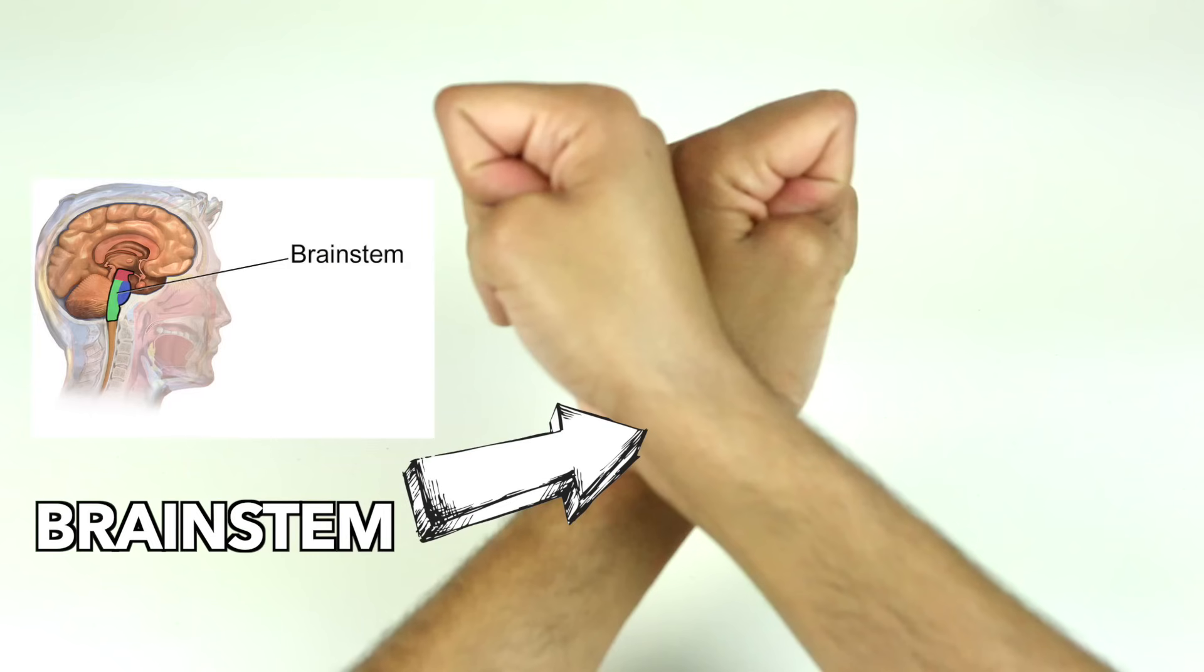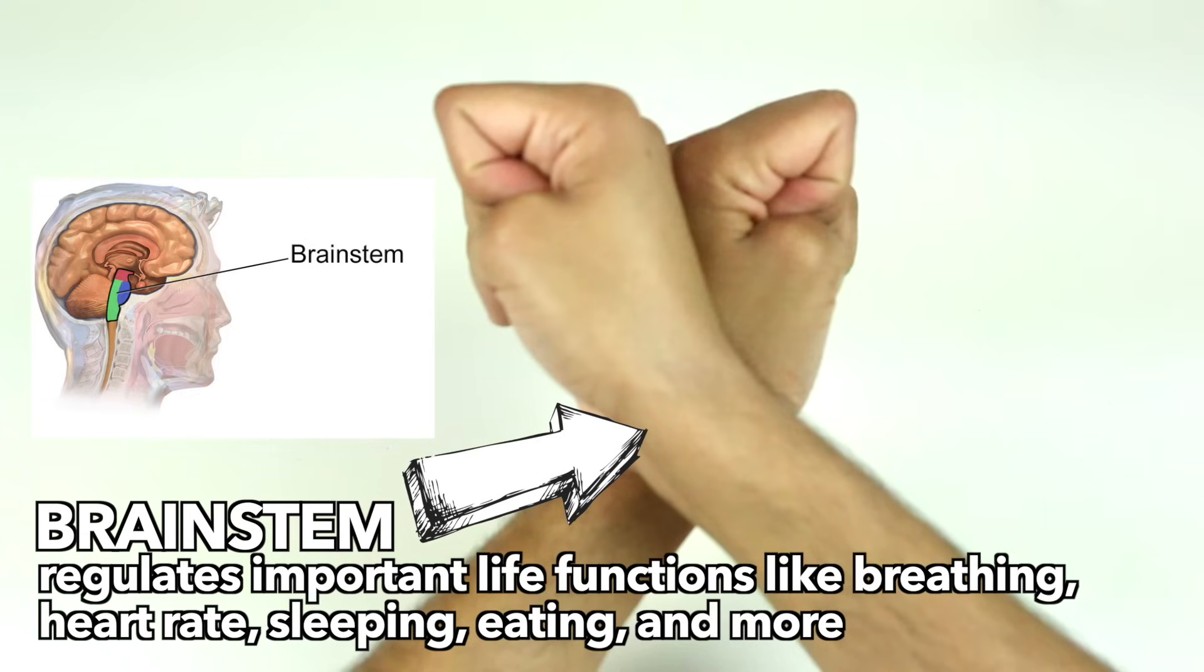Your wrists represent the brain stem. The brain stem sits at the very bottom of your brain. It's the most basic part of your brain and regulates important life functions like breathing, your heart rate, sleeping, eating, and more.